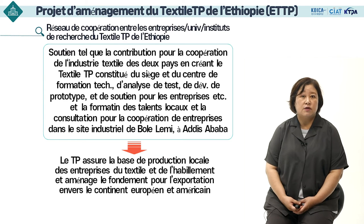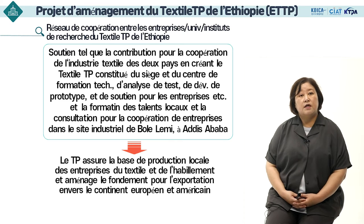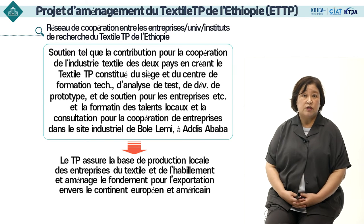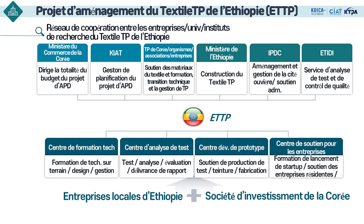Il s'agit ainsi de soutenir la formation de la main-d'œuvre locale et la consultation pour la coopération entre les entreprises. L'objectif du projet est d'assurer une base de production locale pour les entreprises nationales de textiles et d'habillement et de créer une base pour l'exportation vers l'Europe et l'Amérique du Nord. Il existe un centre de formation technique du textile et de l'habillement au sein du Technopark ainsi qu'un centre de tests et d'analyses qui encourage les opérateurs à émettre des rapports d'analyse pour les buyers lors de l'exportation, conformes aux normes internationales.